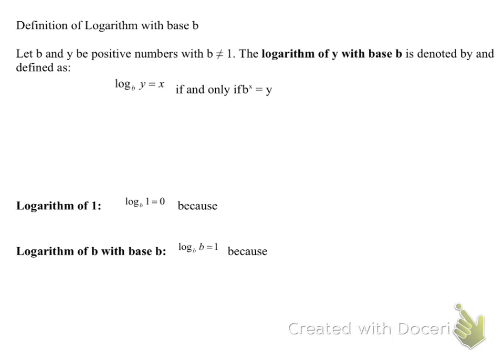And so now we move on to logarithms, the definition of a logarithm with base b. If b and y are positive numbers, and again, b can't equal 1, because if you raise 1 to a power, then you're just going to get 1. The logarithm of y with base b is denoted and defined by, and this is read as the log base b of y, or the log of y with base b, equals x. And the way I always remember this is I call it the loopy thing.